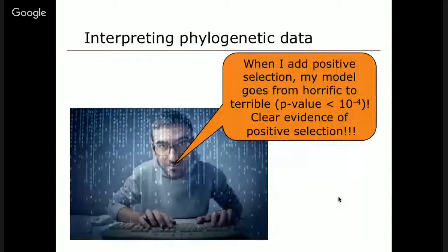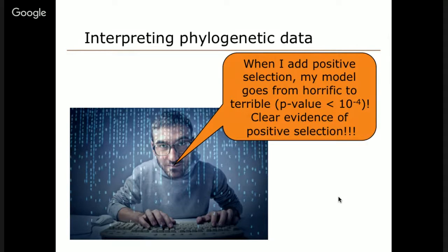We know these models are bad — they do not explain the data very well — but they are still the basis for interpreting the phylogenetic data. When I add positive selection, my model goes from horrific to terrible. That's the type of judgment we're using to establish evidence of various signals or processes in the evolutionary record. By having these rather unrealistic models, we risk model misspecification, where we can end up making claims not justified by the record, but rather just because our models are not good enough to tell otherwise.